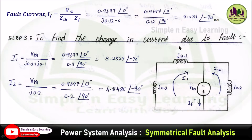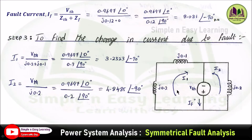Step 3: Find the change in current due to the fault in other parts of the system. The procedure is to fix the voltage source in reverse polarity and remove all other sources. With V_Thevenin placed in reverse polarity at the fault location, current I1 flows in the generator loop and I2 flows in the motor loop. I1 equals V_Thevenin divided by (j0.2 + j0.1), and I2 equals V_Thevenin divided by j0.2. Substituting values gives the currents I1 and I2, which are the currents in other parts of the system due to the fault.